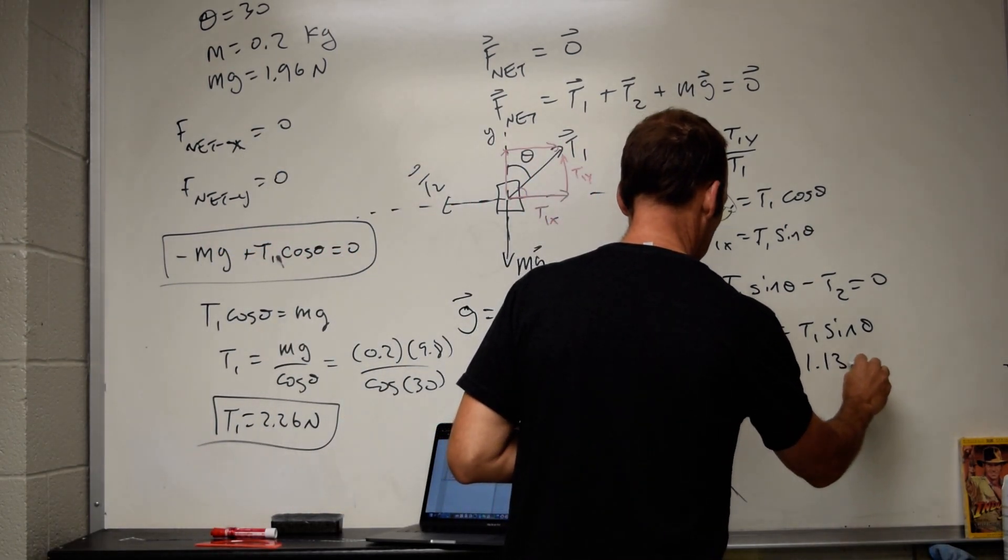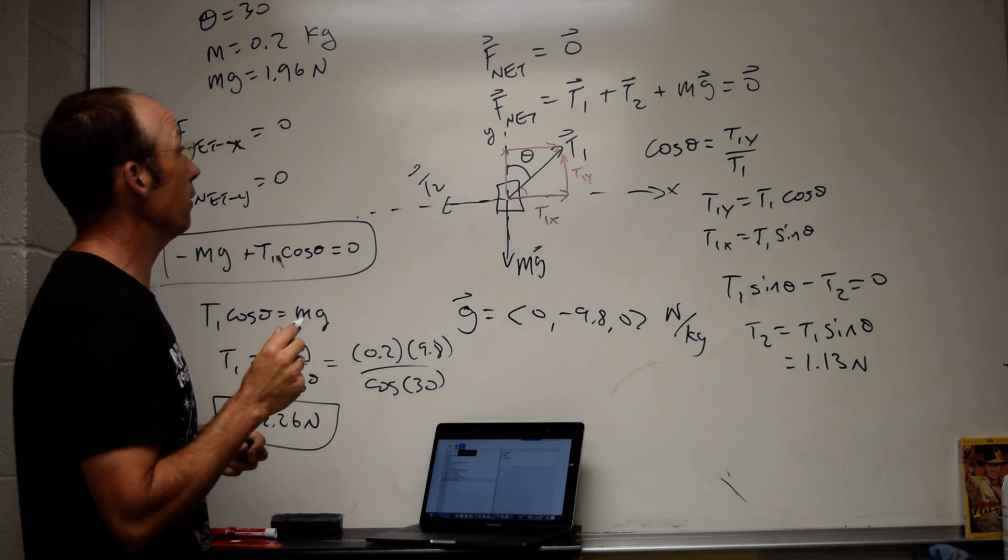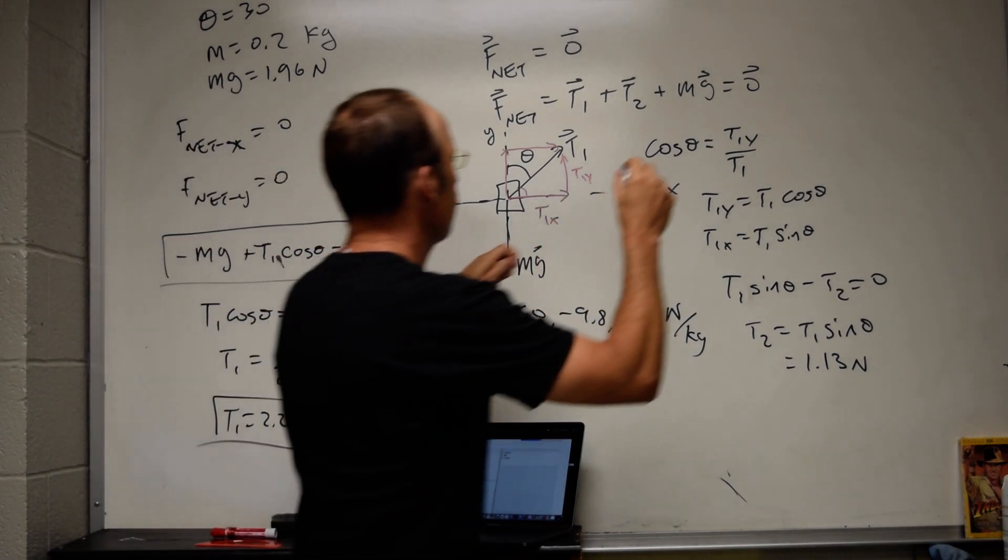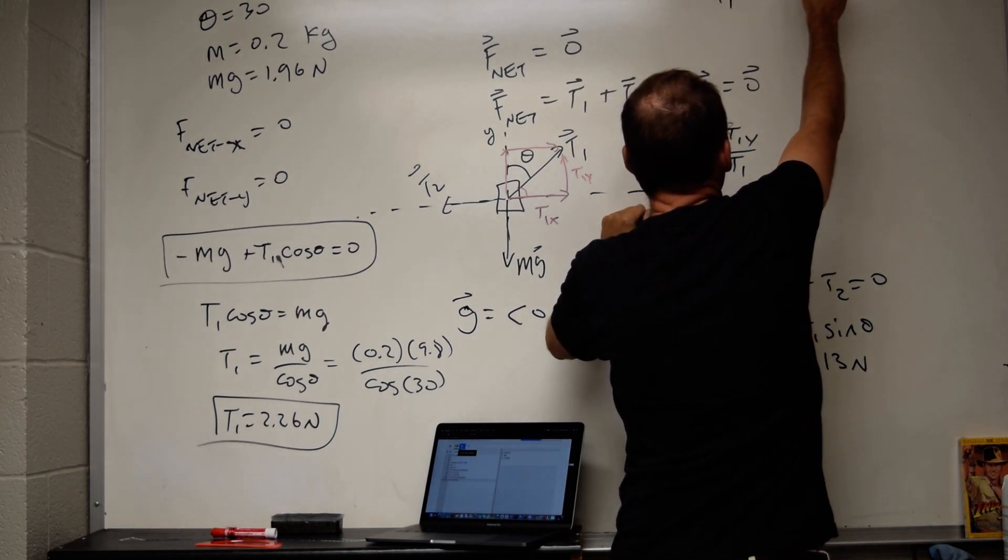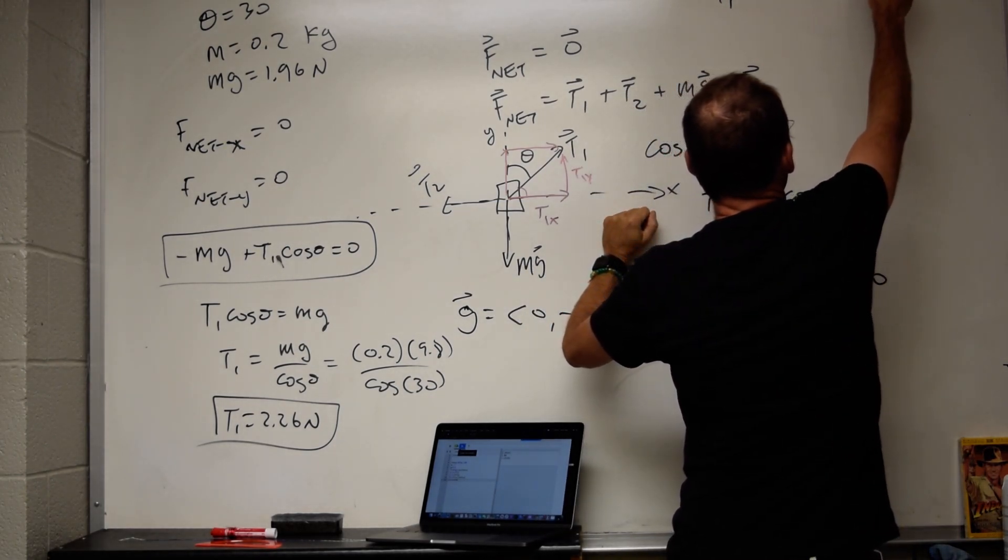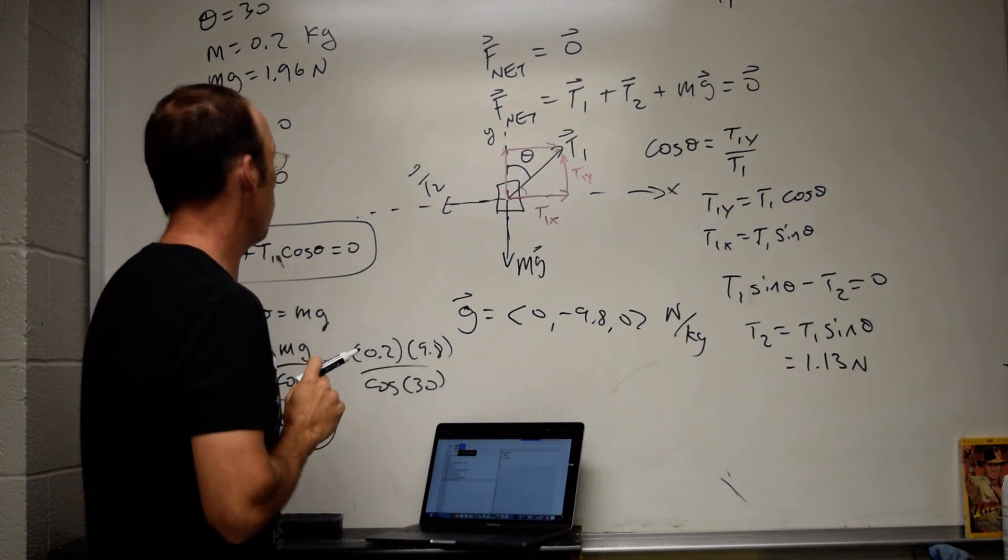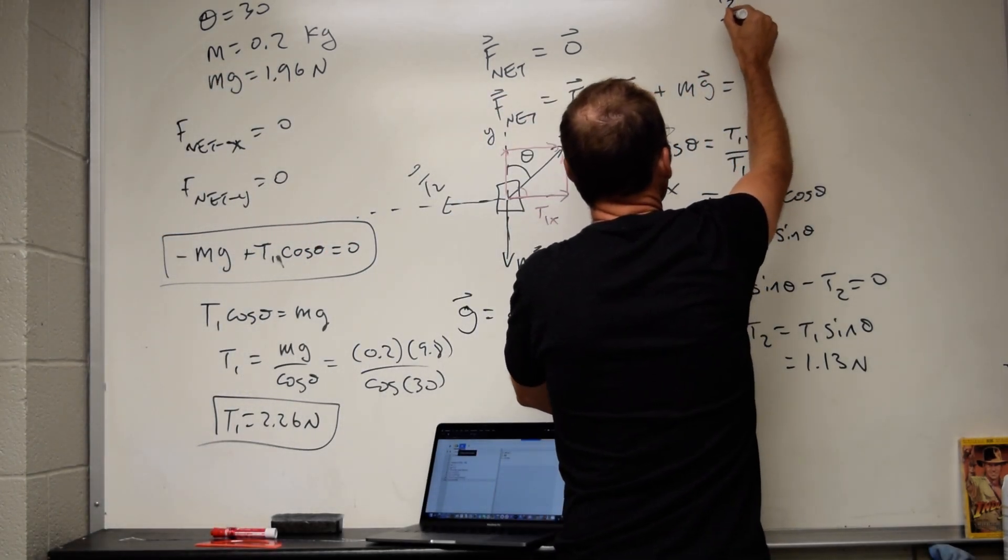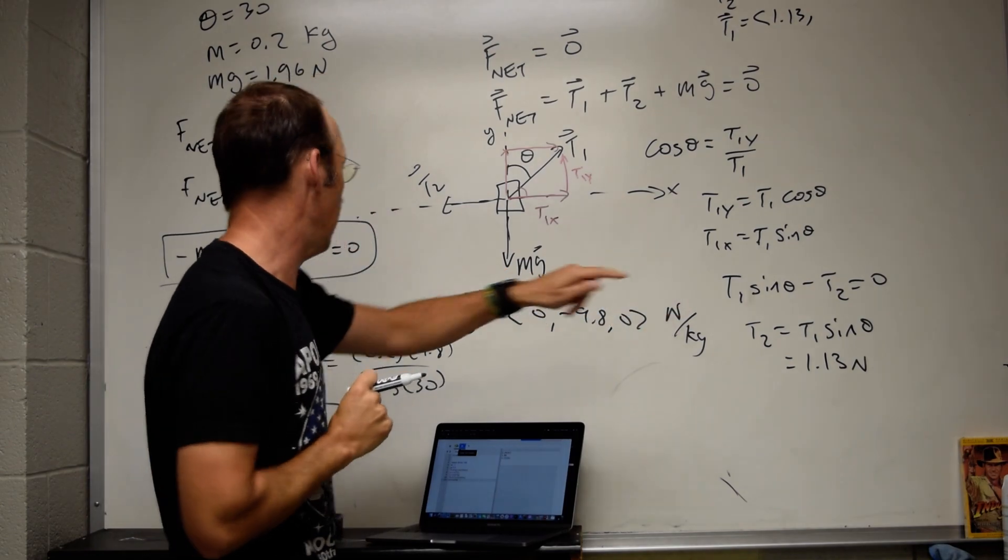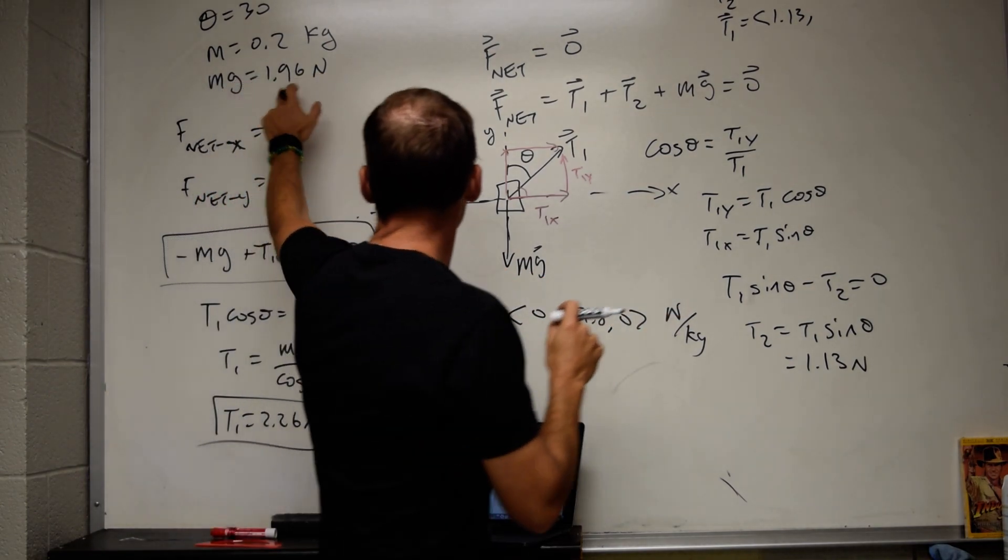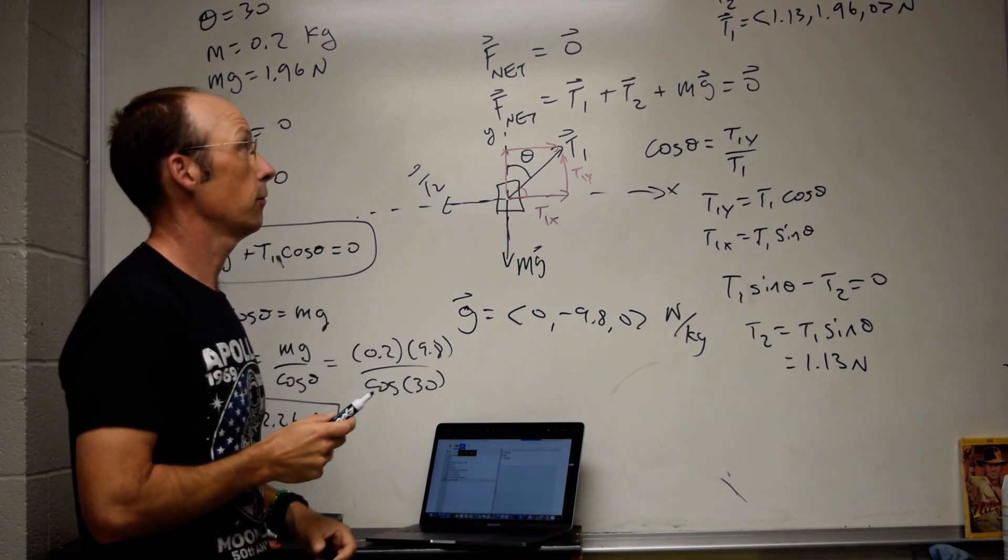And I get 1.13. And that's the force in newtons. Okay. So now I can write these two tensions as vectors. So T2 is going to be negative 1.13 newtons, 0, 0 newtons. T1 vector is going to be equal to 1.13. That's the x component because we already calculated that. The y component is this 1.96. And there you go. There's my two tensions.